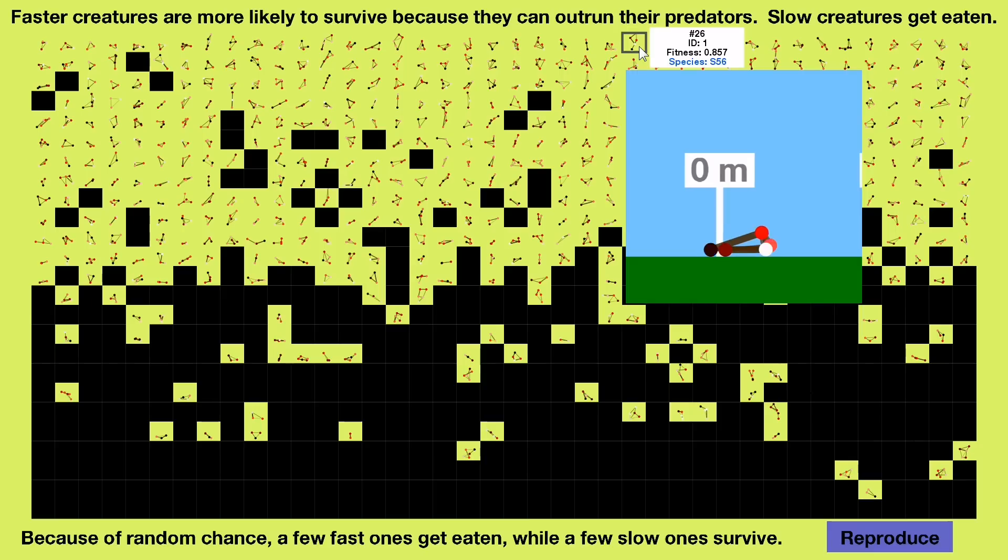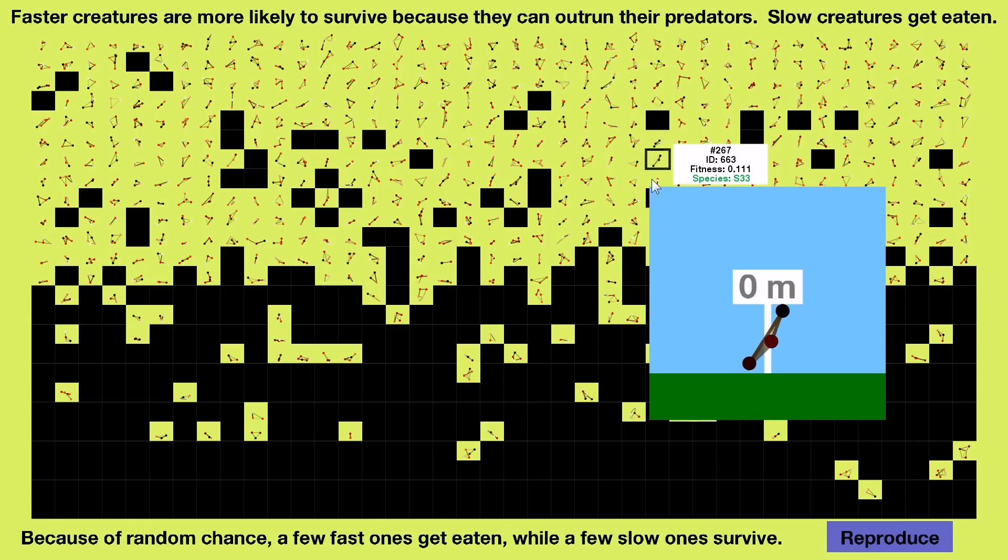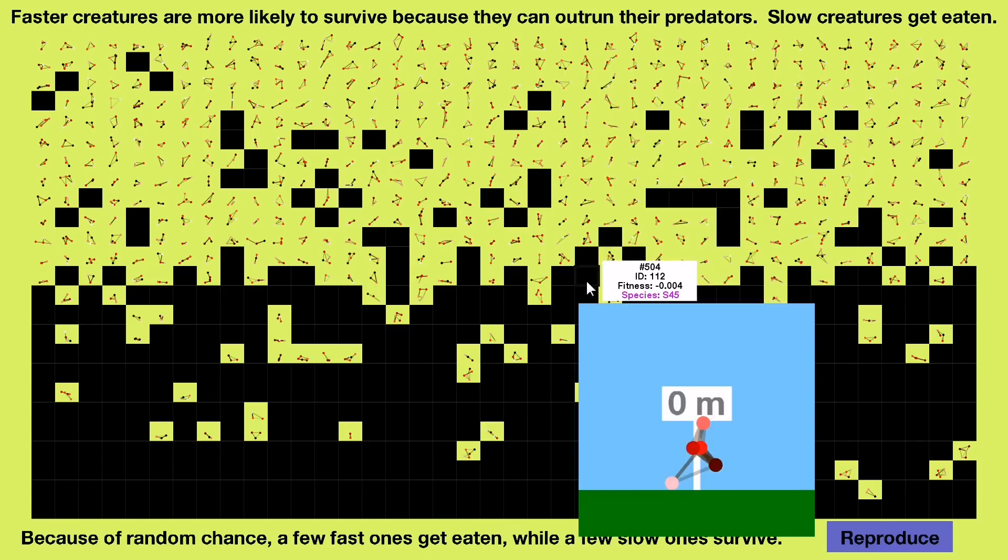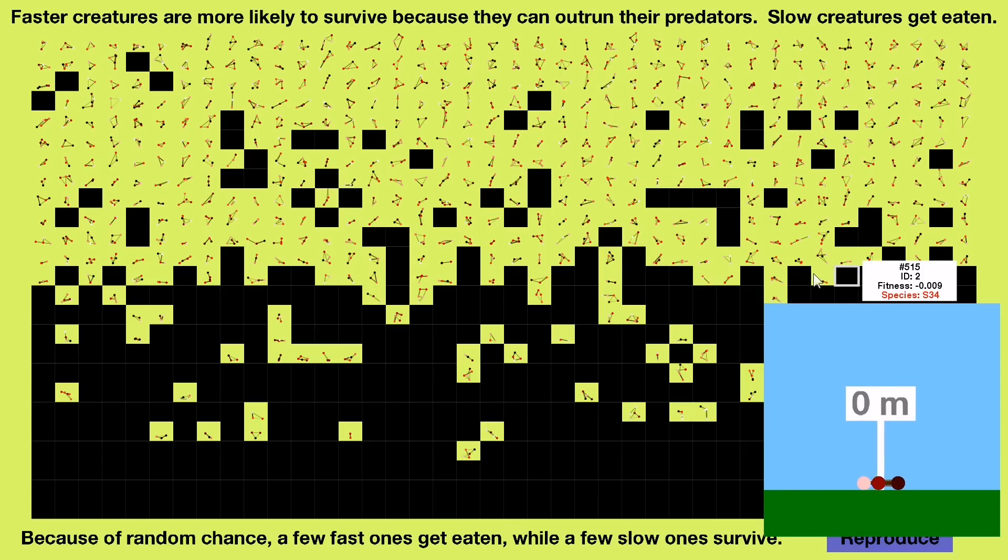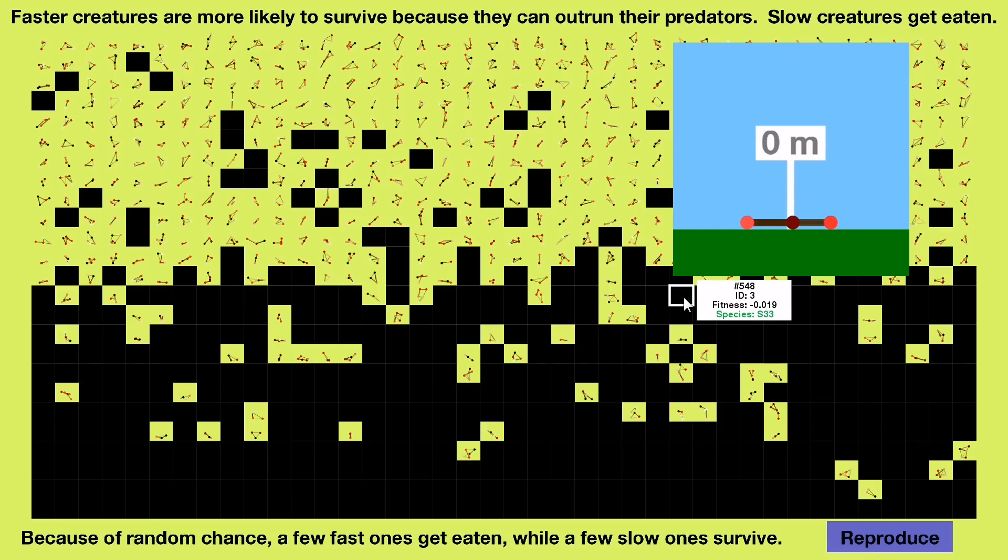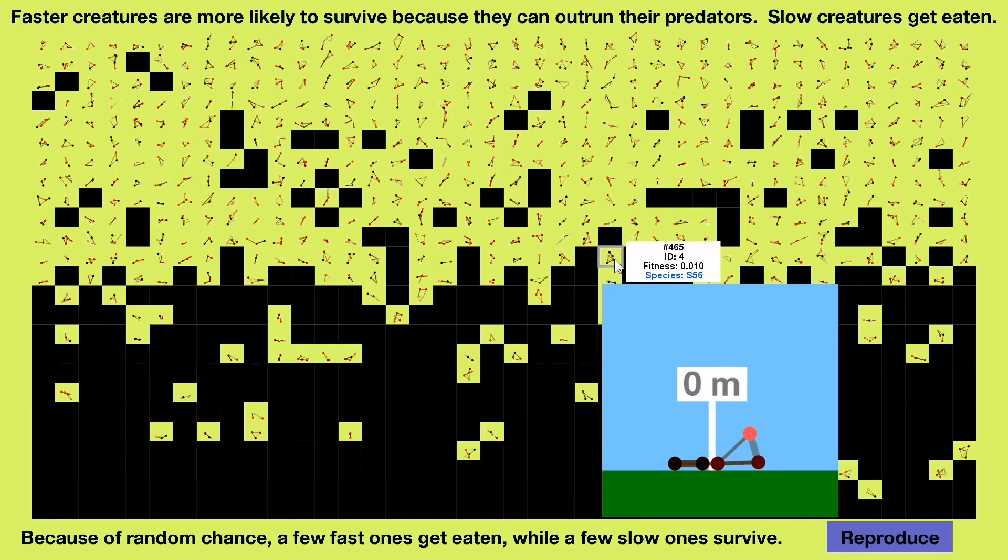Hooray for creature 1, who, as expected, survived and gets to pass on their genes. Creature 2 and 3 died, though. They were too slow. And creature 4, right around the middle, survived also.